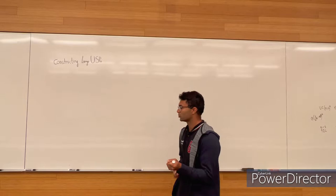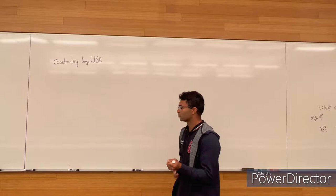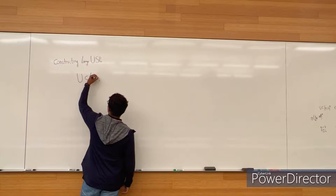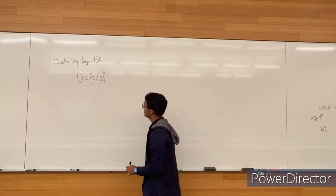So what is a USP? A uniquely solvable puzzle — a USP — U is a subset of {0, 1, 2}^k, so it's a subset of width k, and we say that U is a USP...